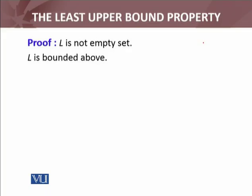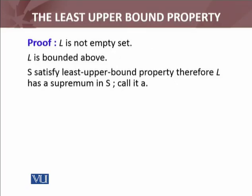L is bounded above. All lower bounds of B — so L will also be bounded above, because for any member of set B you take, since we have kept lower bounds of B in L, for all elements X belonging to L, X will be less than or equal to every element b of B. So L is bounded above. Now L is bounded above and S satisfies the least upper bound property — it means there is a supremum of L in S, and we call it A.